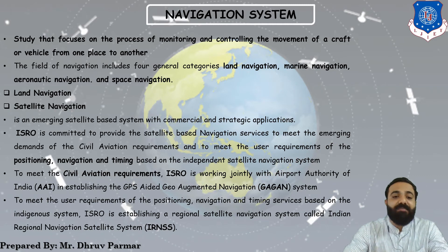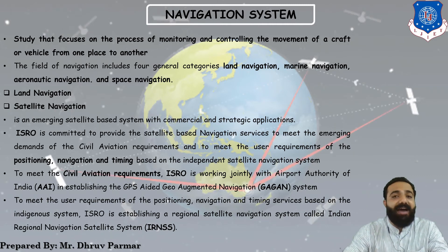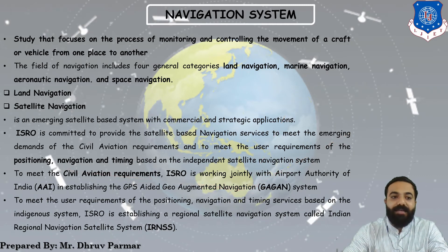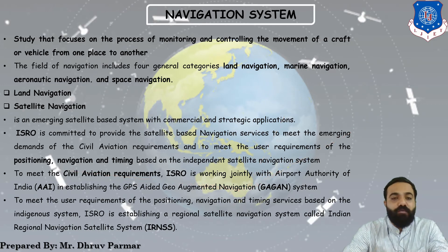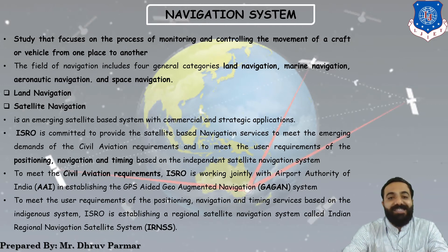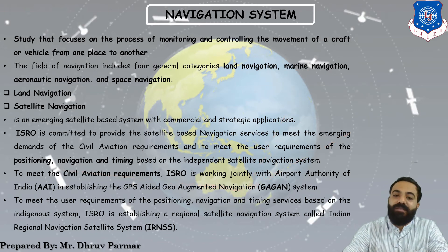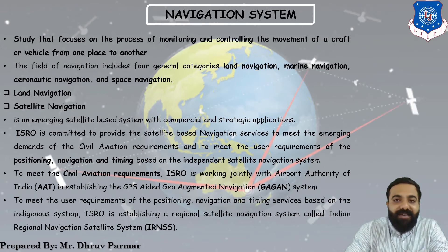The second system is IRNSS — the Indian Regional Navigation Satellite System — which is useful to users for positioning, navigation, and timing. This is a key navigation system developed for India.